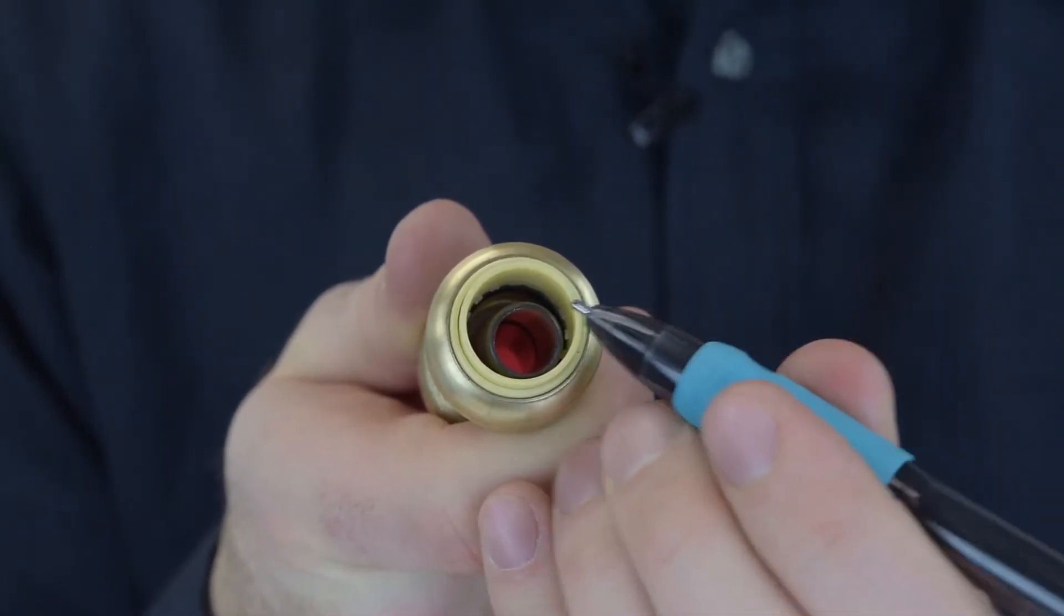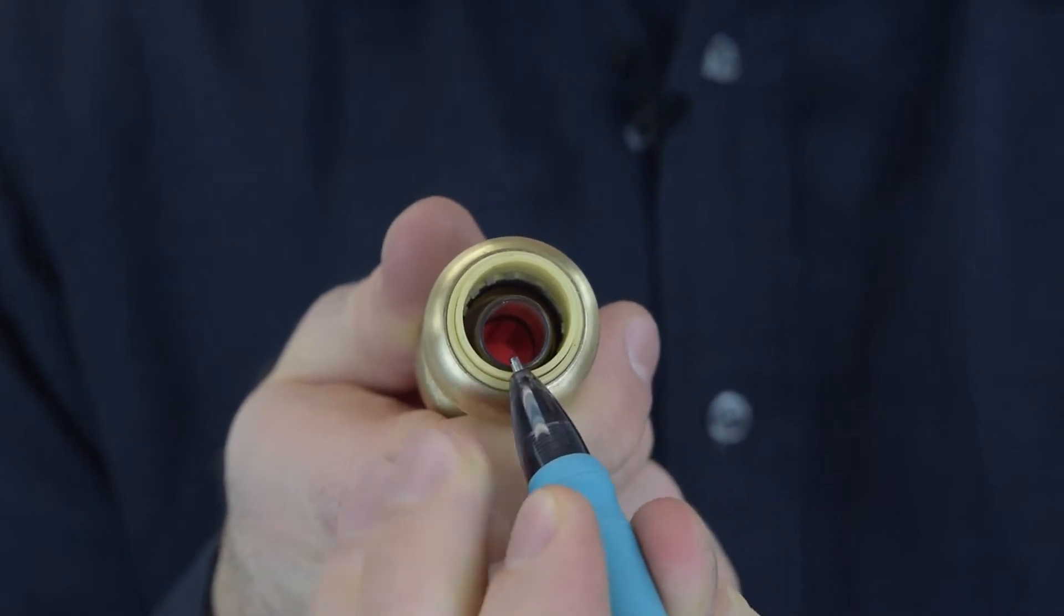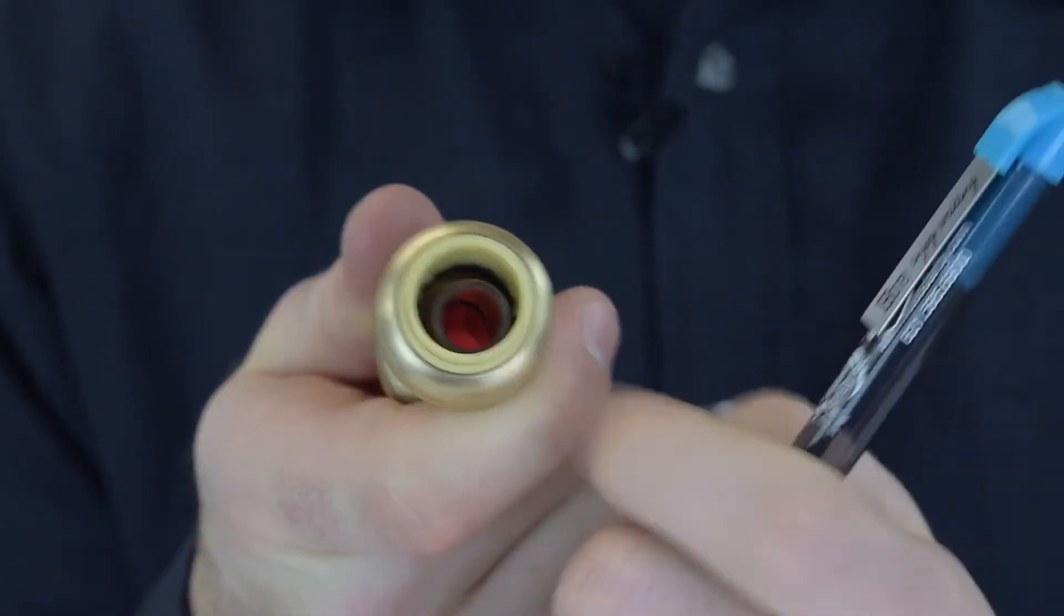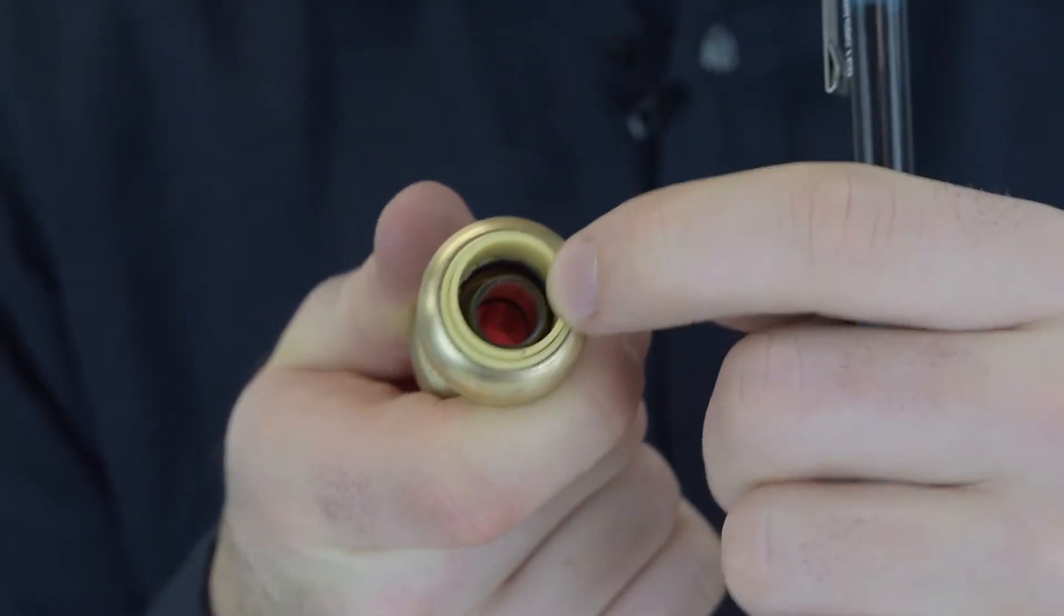This inner circle right here is a stiffener. Its purpose is to provide extra support when using PEX tubing. Copper pipes don't require this, so you can take this right out of the tube.